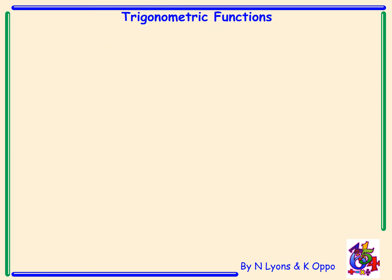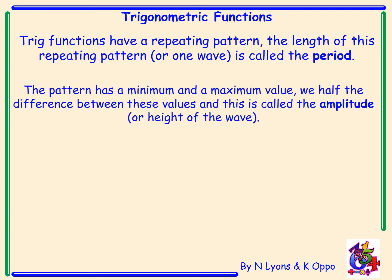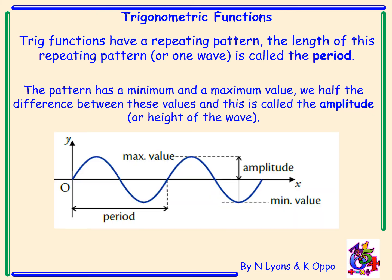Trig functions. Trig functions have a repeating pattern. The length of this repeating pattern, or the length of one wave, is called the period. The pattern has a minimum and a maximum value. We half the difference between the maximum and minimum and this is called the amplitude or it may be sometimes referred to as the height of the wave.